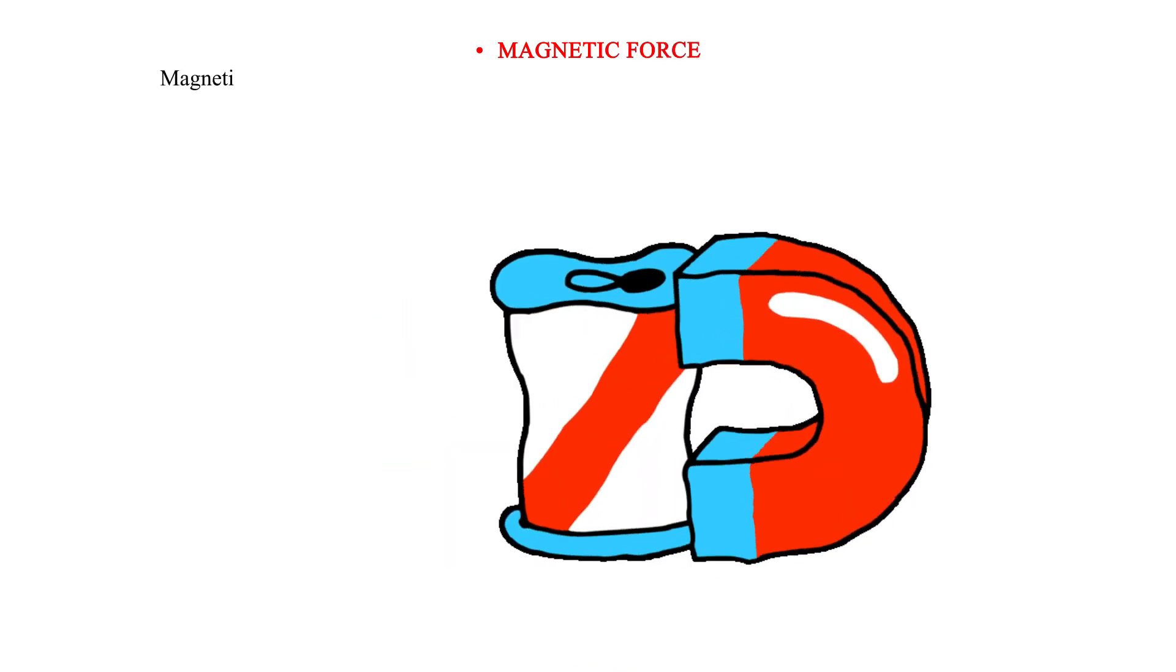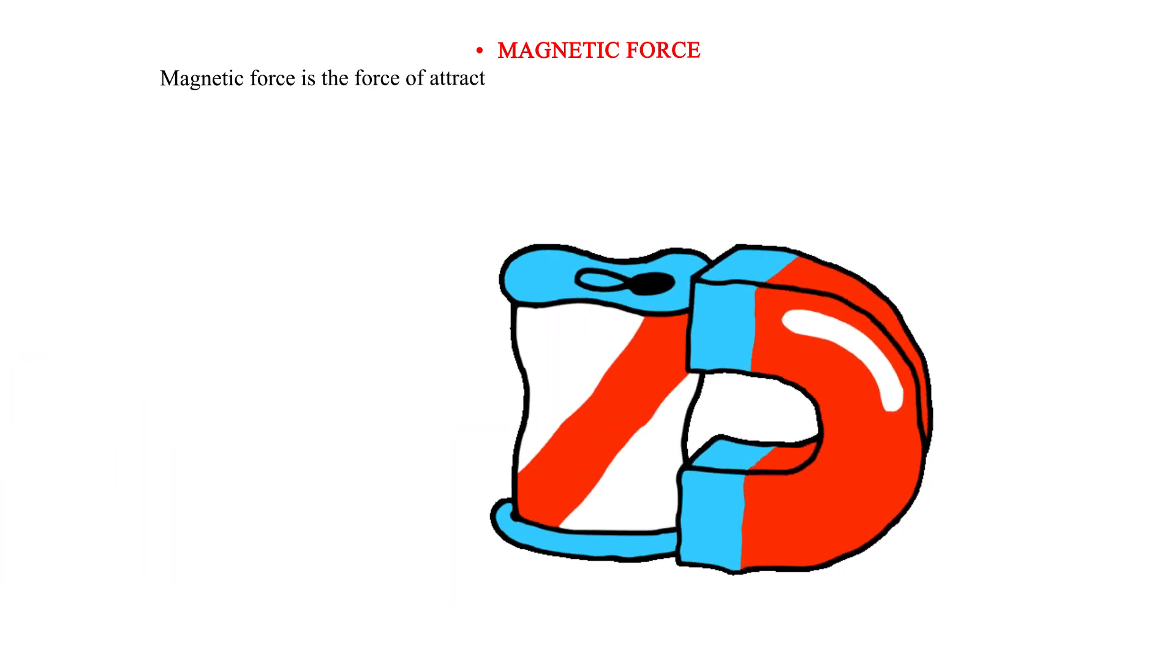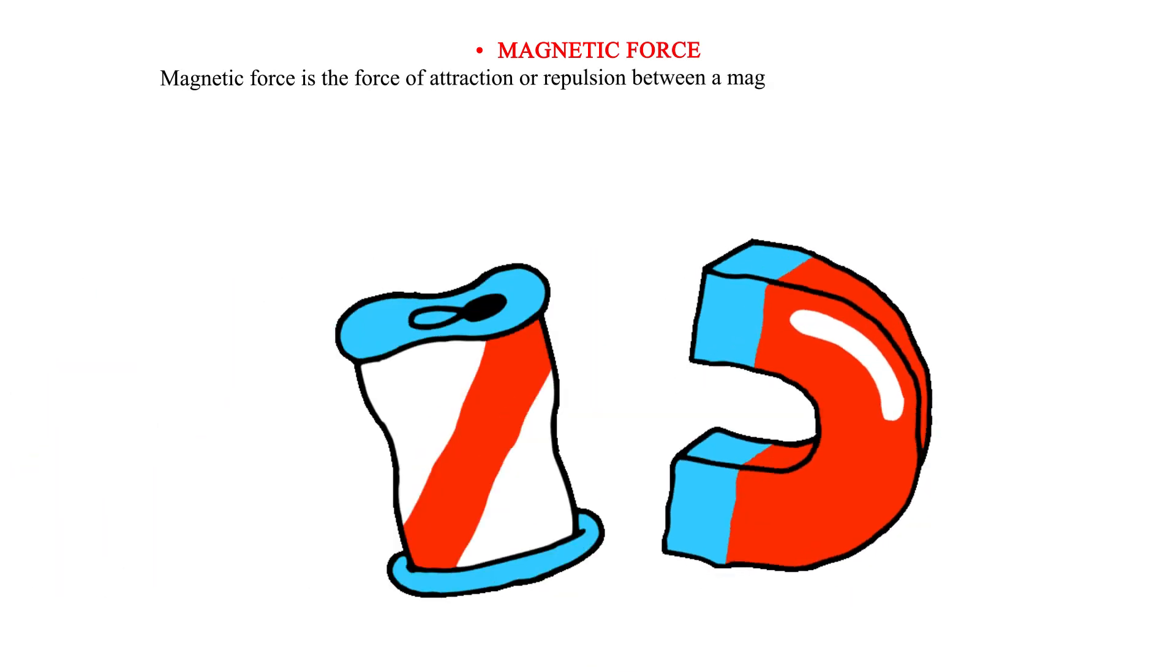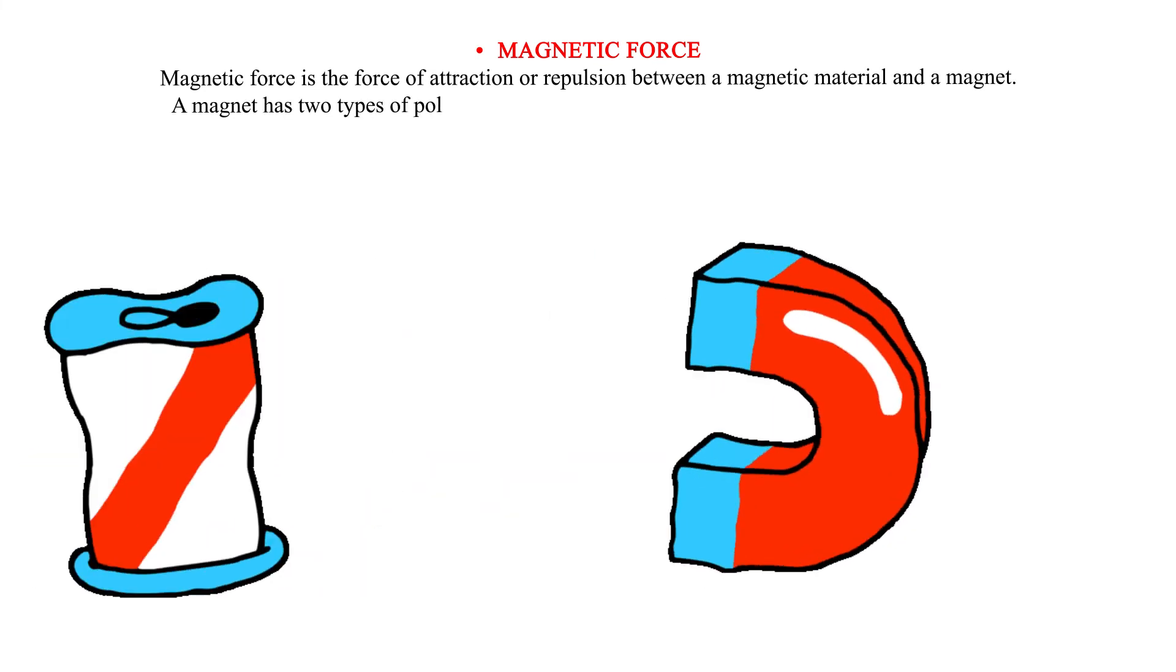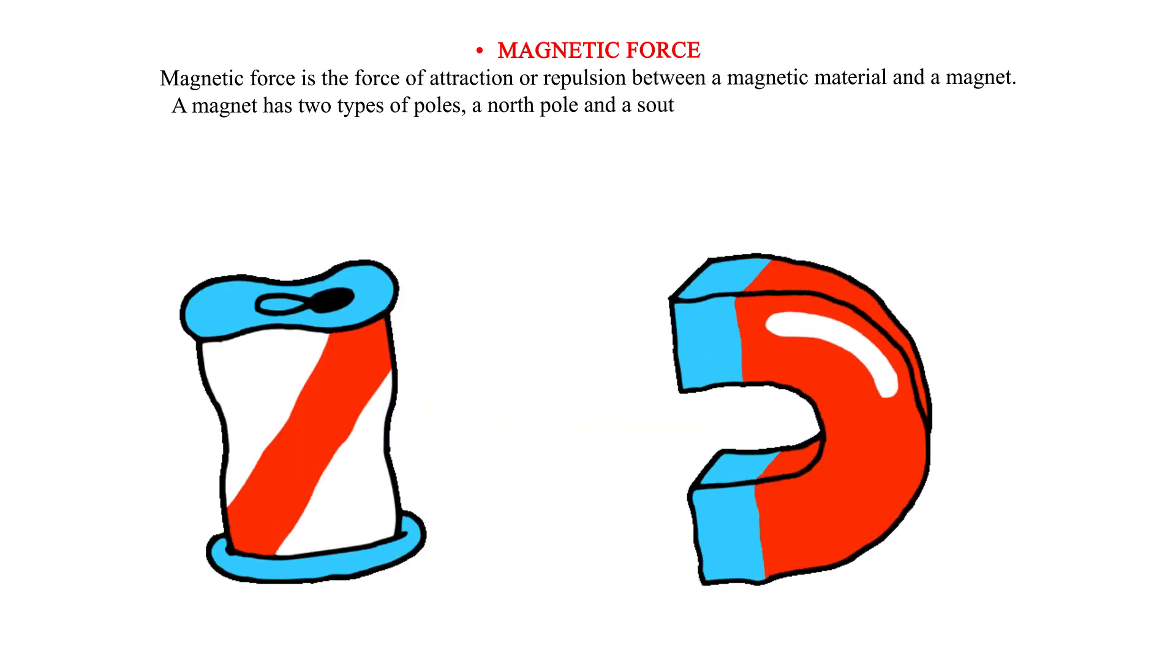Magnetic force. Magnetic force is the force of attraction or repulsion between a magnetic material and a magnet. A magnet has two types of poles, a north pole and a south pole.